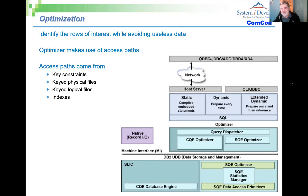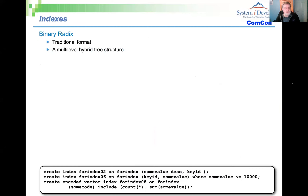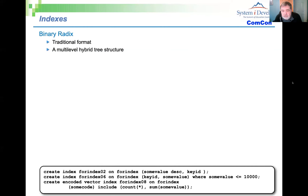Indexes allow us to create access paths in ways that go beyond what we can do with key constraints or physical and logical files. On IBMi there are two types of index. The first is binary radix — the traditional indexing system that has been on the system since the System/38 in 1979. It is known as a hybrid tree structure.